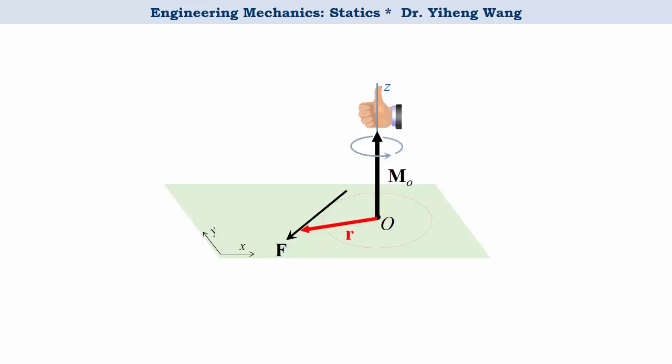The moment about point O caused by force F is calculated in vector form simply as the cross product of position vector R and force vector F. Note that R could be any vector as long as it starts from point O and ends anywhere on the line of action of the force.